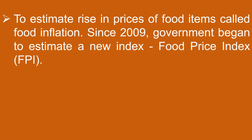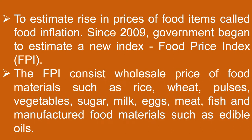To estimate the rise in prices of food items, called food inflation, since 2009 the government began to estimate a new index called the Food Price Index (FPI). The FPI consists of wholesale prices of food materials such as rice, wheat, pulses, vegetables, sugar, milk, eggs, meat, fish, and manufactured food materials such as edible oils.